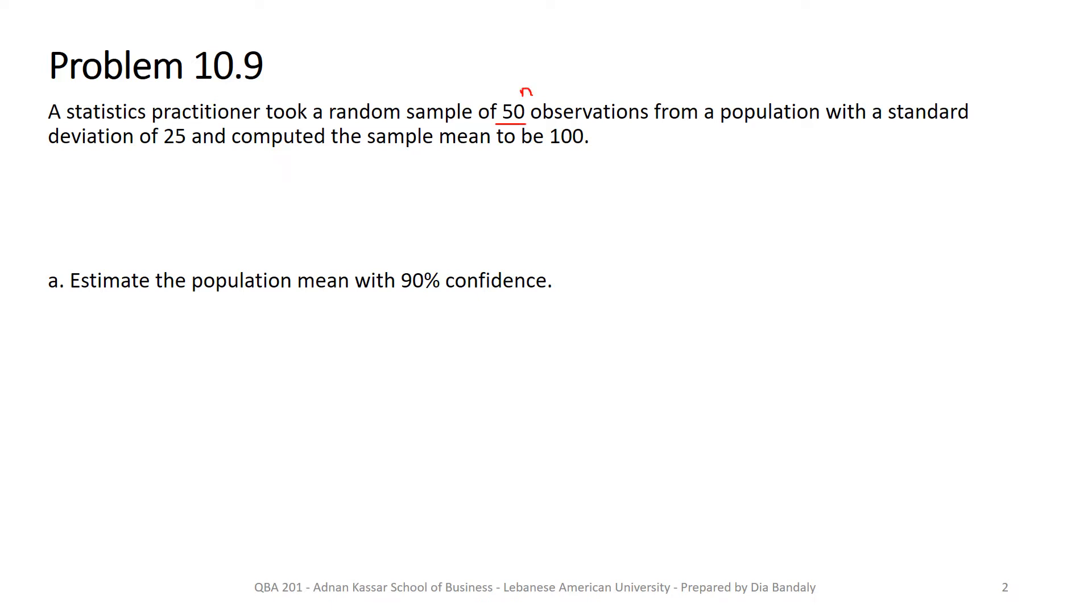So obviously this is our n from a population with standard deviation sigma equals 25. And he computed the sample mean to be 100, so this is x-bar. Let's note these down: population standard deviation sigma equals 25, sample size n equals 50, and x-bar equals 100.